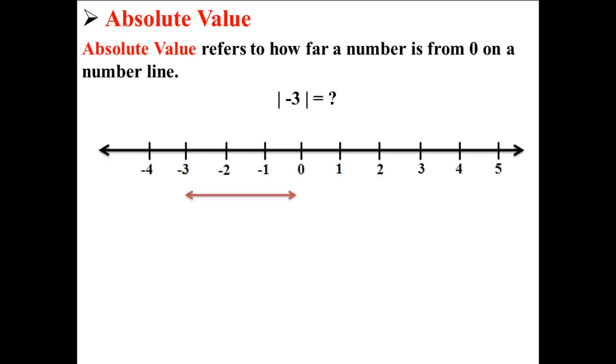Here we put negative 3 on our number line. We can see that negative 3 is 3 points away from 0. So the absolute value of negative 3 is equal to 3.